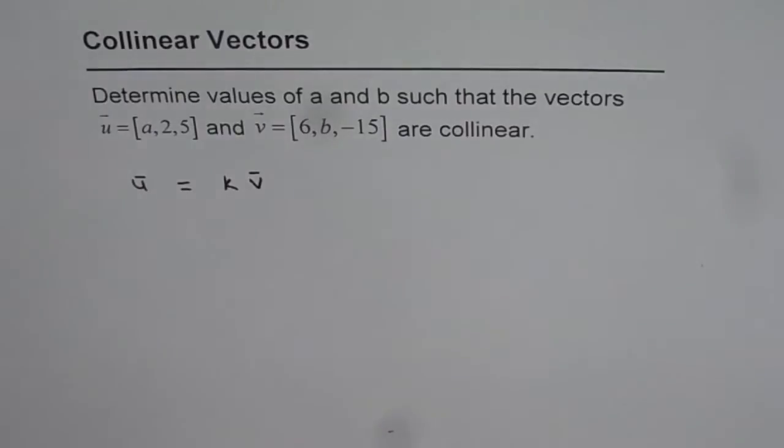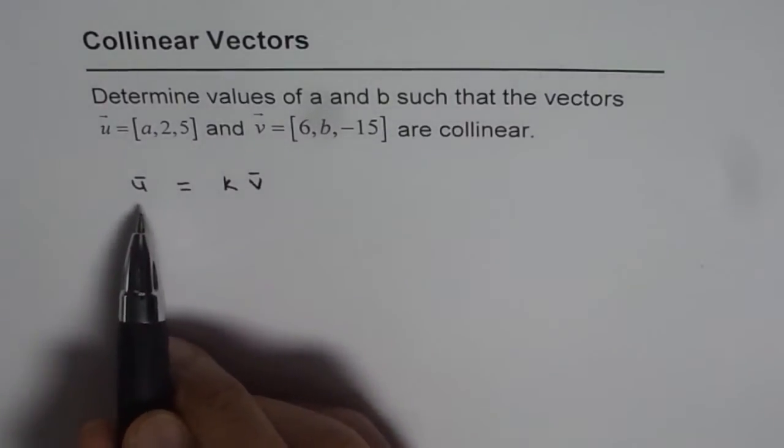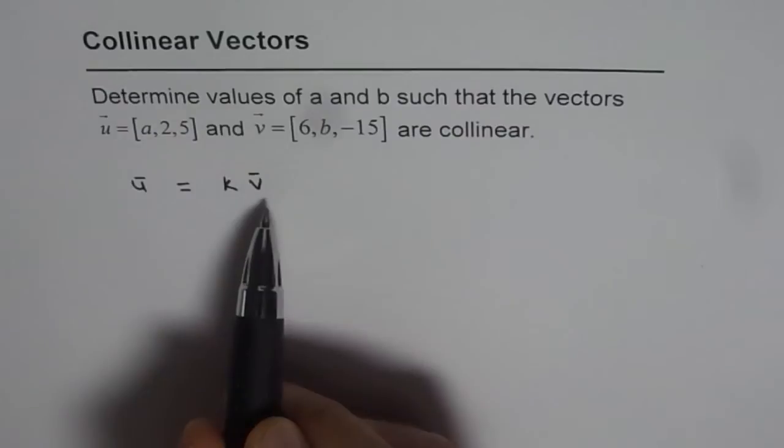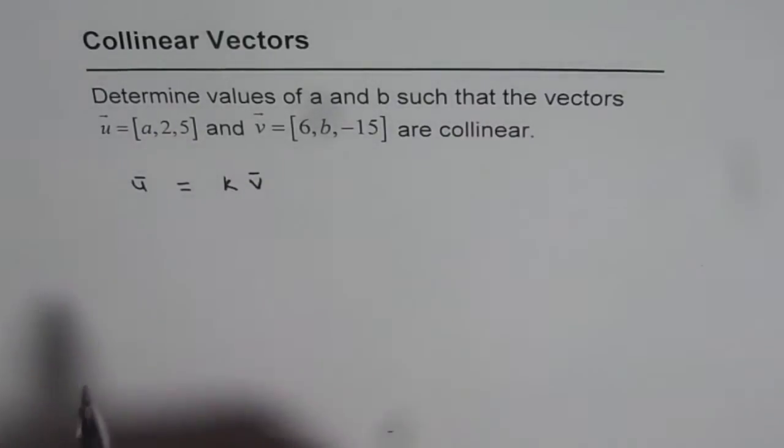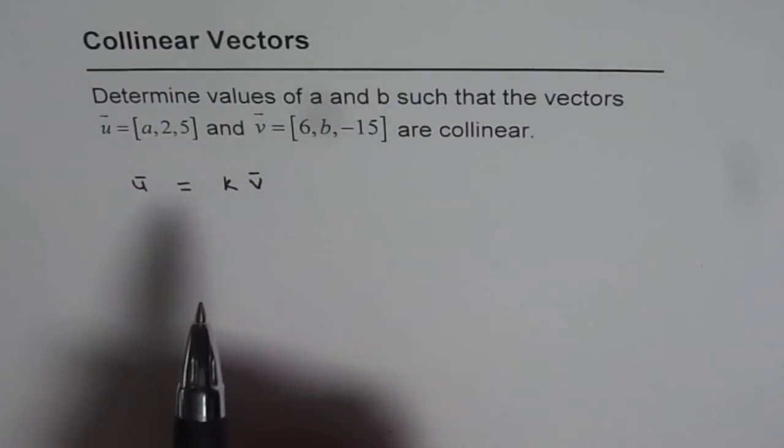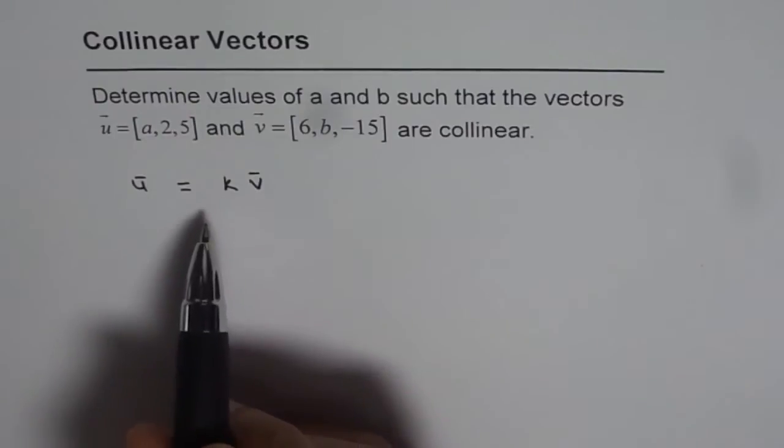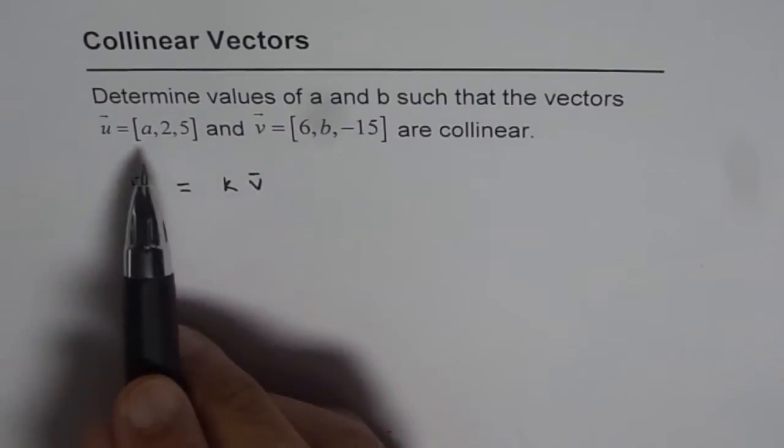Now if we have a value of k which can show that u equals v, then they are collinear. Since we are given that the vectors are collinear, there exists a value of k that will help us find a and b.